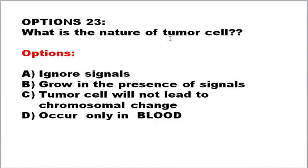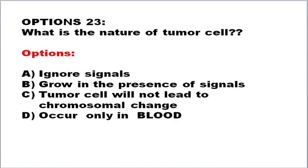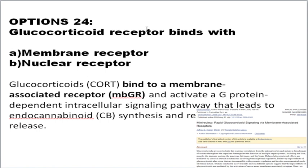What is the nature of tumor cells? Refer to cancer.gov. Tumor cells generally ignore signals from surrounding groups of cells — that's why they keep proliferating, ignoring signals to stop cell division or to undergo programmed cell death (apoptosis). Other options are wrong: tumor cells do not occur only in blood — they can occur in any part of the body. Tumor cells undergo chromosomal changes but they do not grow in the presence of signals; rather, they ignore signals.